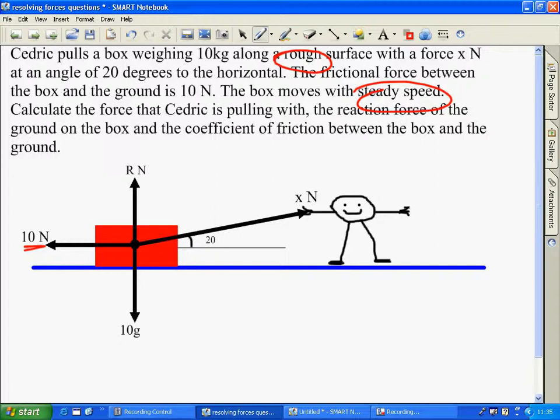So, let's resolve horizontally, and we have the component here of Cedric's force pulling with. We're moving through the angle, so that's x cos 20. And that equates to the force in this direction here, which is 10.